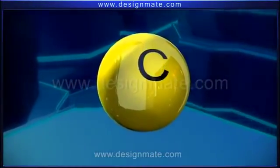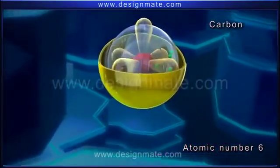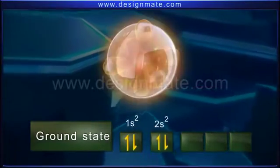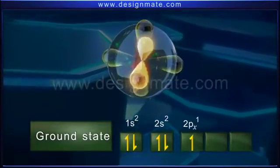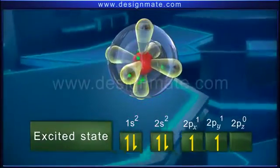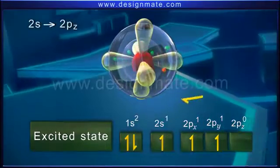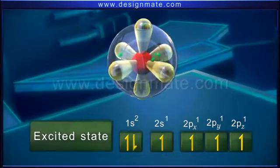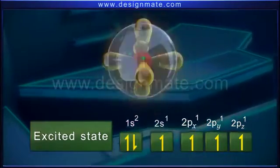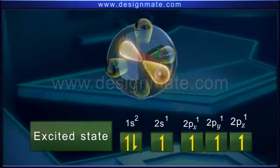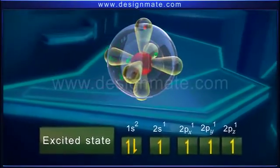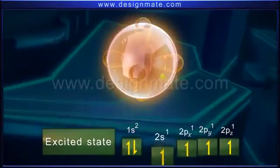Consider a carbon atom having atomic number six. In the ground state, its electronic configuration is 1s² 2s² 2px¹ 2py¹ 2pz⁰. On excitation, an electron jumps from the 2s orbital to the 2pz orbital, resulting in an electronic configuration of 1s² 2s¹ 2px¹ 2py¹ 2pz¹. In order to form four sigma bonds with other atoms, the 2s, 2px, 2py, and 2pz orbitals intermix.